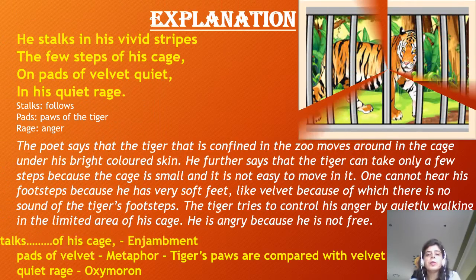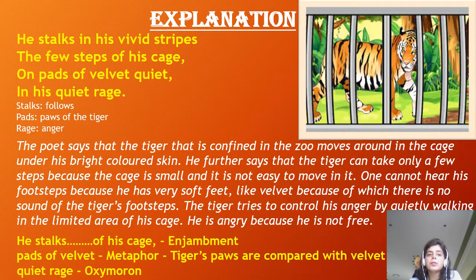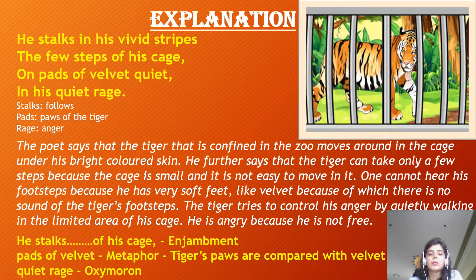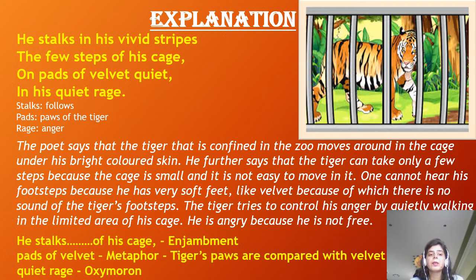Now coming to the explanation. The first stanza — I will read it out, then discuss the word meanings followed by the explanation. 'He stalks in his vivid stripes, the few steps of his cage on pads of velvet quiet in his quiet rage.' Here 'he' stands for the tiger. 'Stalks' means he follows; 'pads' means the paws of the tiger; 'rage' means anger.